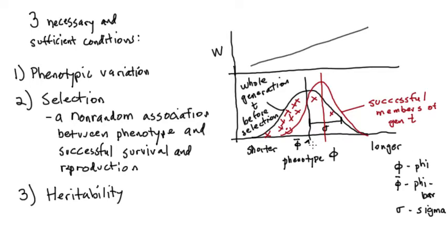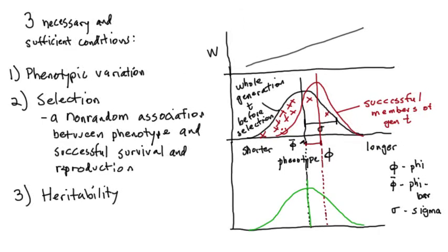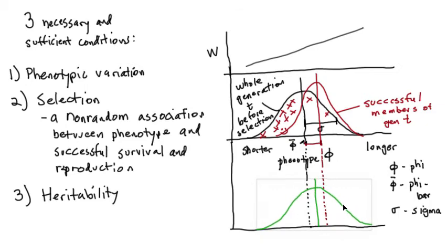So if the mean phenotype of the selected parents from generation T is some distance from the original mean for their generation, their offspring — generation T+1 — would not be as extreme as their parents. I'm adding a level below the first two on our graphic to give the phenotypic distribution for generation T+1. If heritability were zero, the offspring would be identical in mean with original generation T. With complete heritability, the offspring mean would equal their parents' mean. Since heritability is likely incomplete, the phenotypic mean of the offspring will be somewhere in between.